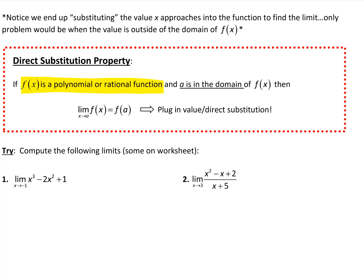This means we can plug in the value — we can use direct substitution. This is going to be our first step when we compute limits. Even if we had a polynomial under a root, we could use the root limit law, pull the limit under the root, and try direct substitution. So our starting place for polynomials, rational functions, and limits in general is to see if we can use the direct substitution property.